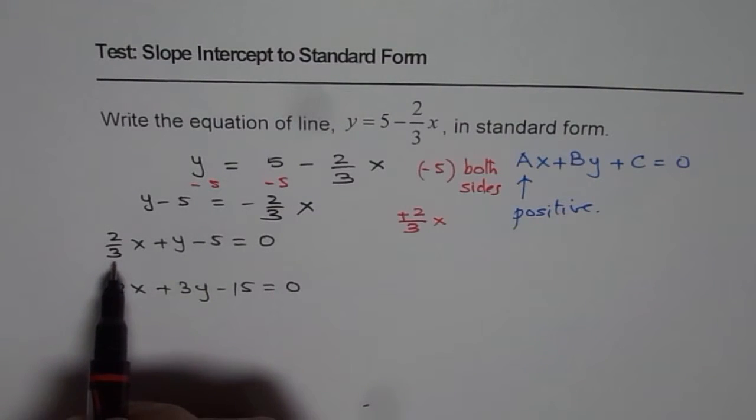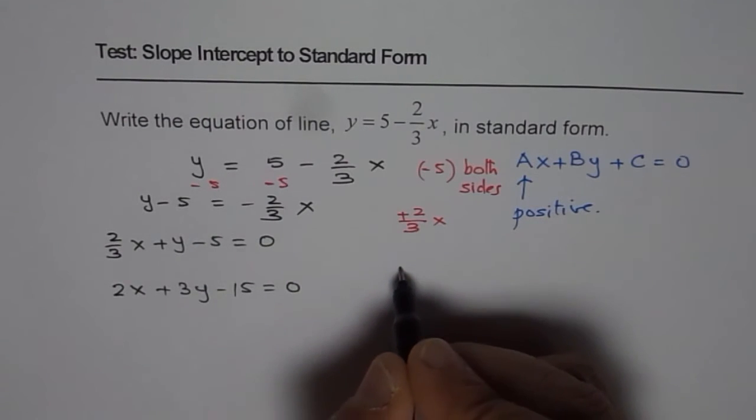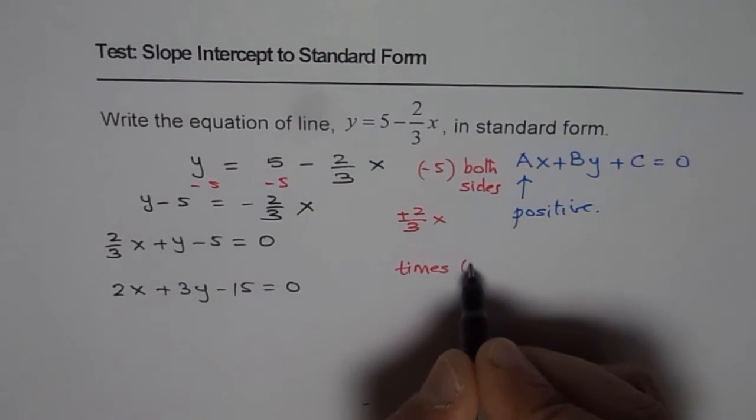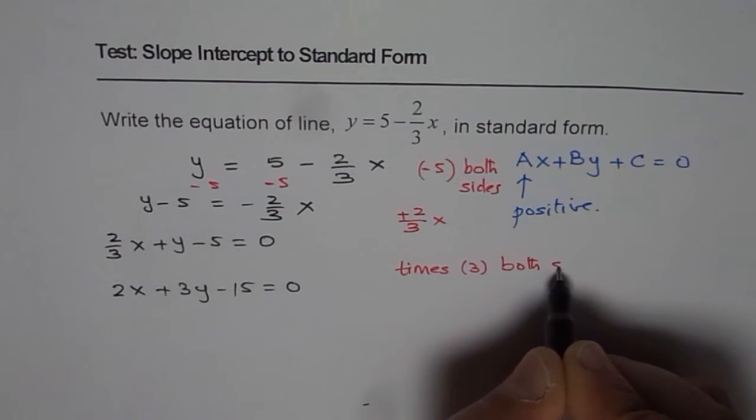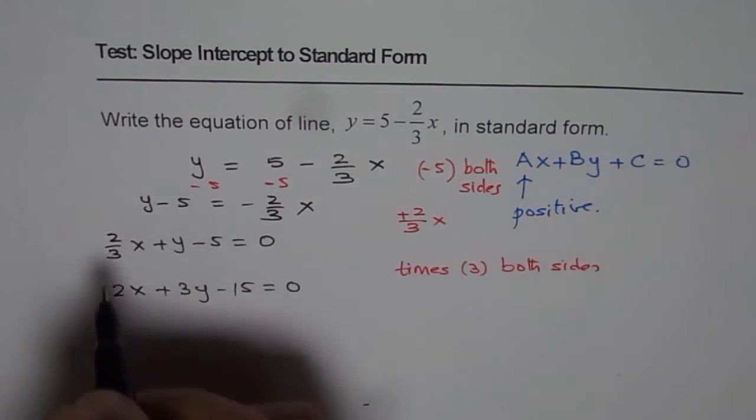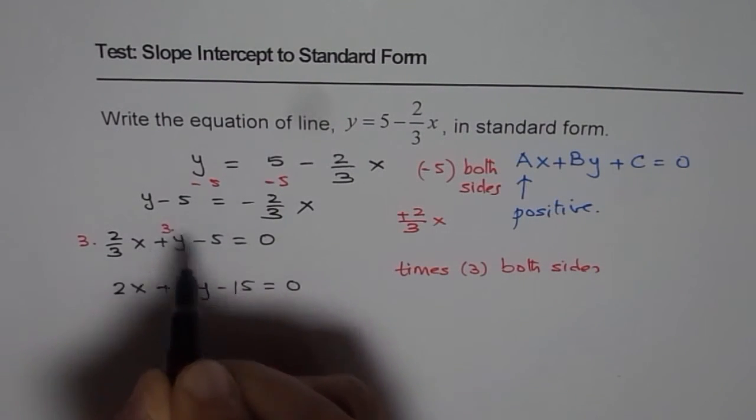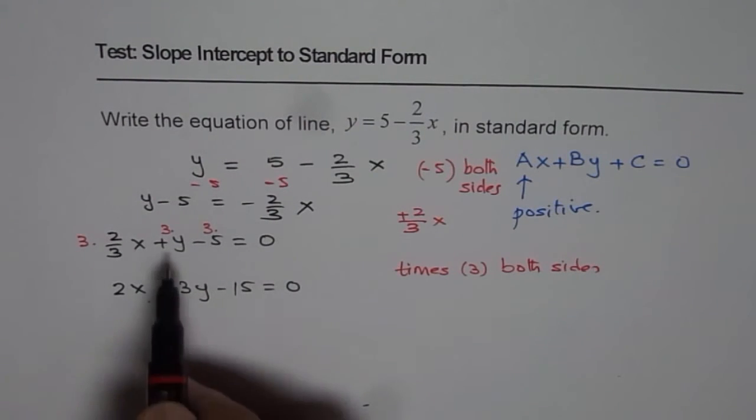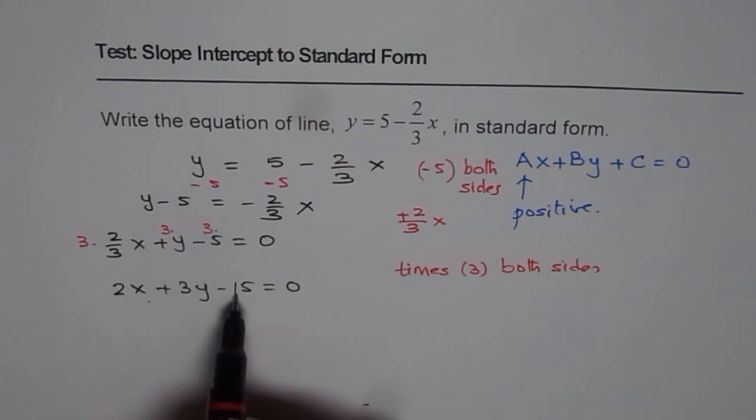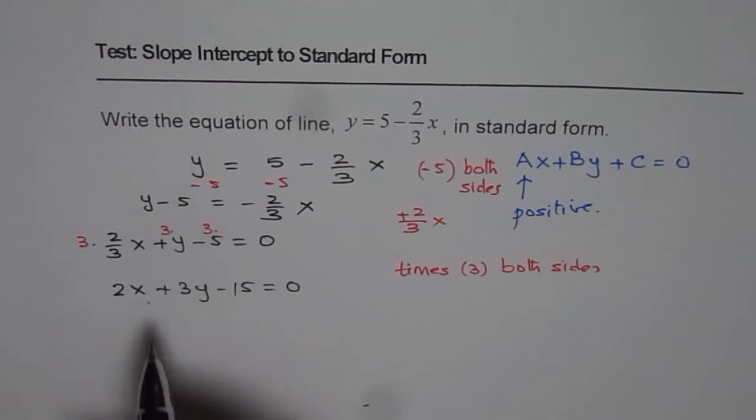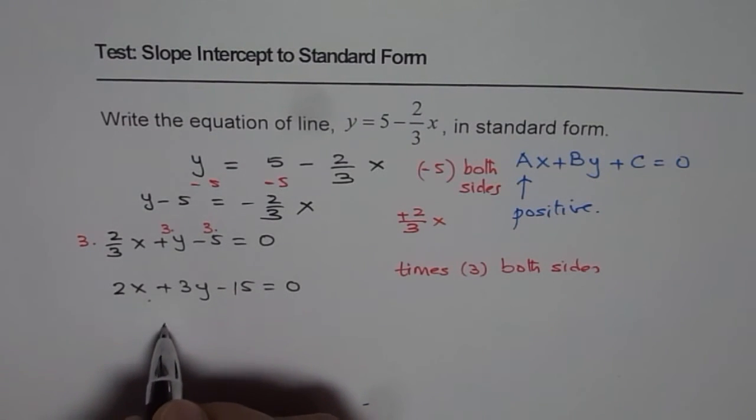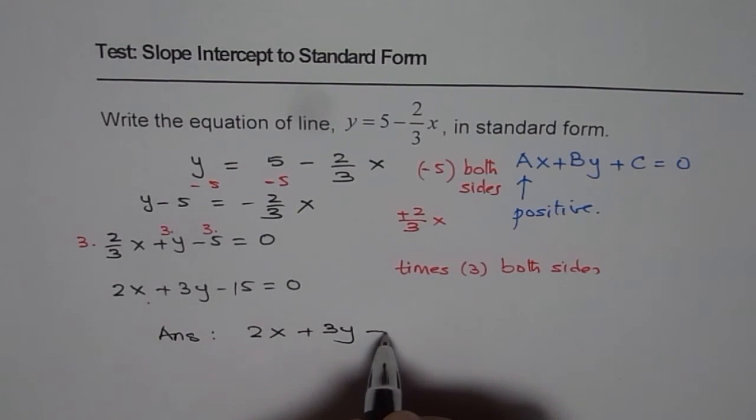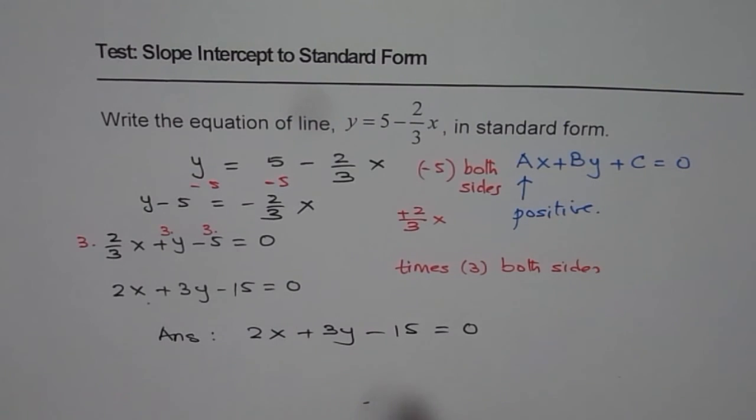And then, since we do not want any fractions as a coefficient of x, we do times 3 both sides. That really means that you multiply each term by 3. 3 and 3 cancels here. You are left with 2x, 3y minus 15 equals 0. That is the equation in standard form. Therefore, we get our answer as 2x plus 3y minus 15 equals 0.